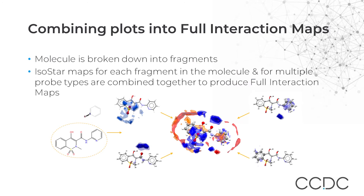If a molecule is broken down into fragments, and the preference of interactions for each functional group is assessed based on the methodology shown in the previous slide, we would be able to map each fragment in the molecule for multiple probe types, then combine these together and get what we call a full interaction map. The figure below shows an example where each functional group in the molecule has been modeled separately with IsoStar, and all of these are combined to give us the full interaction maps, better known as FIMs.